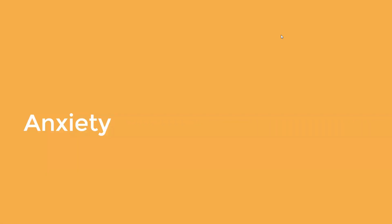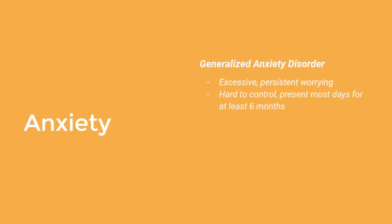The situation you're probably in is that patients are calling feeling super anxious. The main things you're probably thinking about are generalized anxiety disorder — this excessive persistent worrying that's hard to control, present most days for at least six months, a general worry about things overall versus specific things. Adjustment disorder is a sudden onset in the last three months in response to a specific stressor. The treatment is overall the same, but something to think about in terms of expectations of improvement.